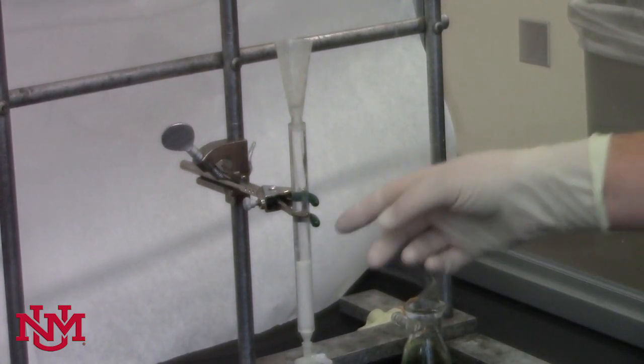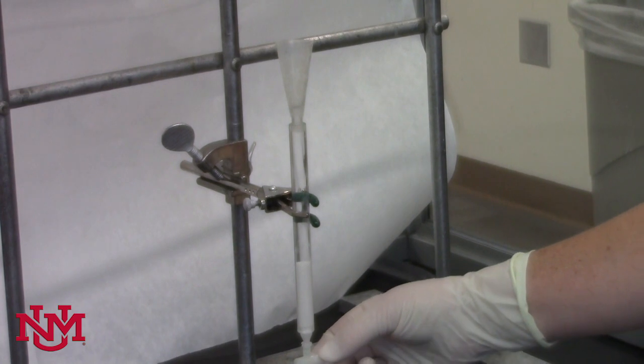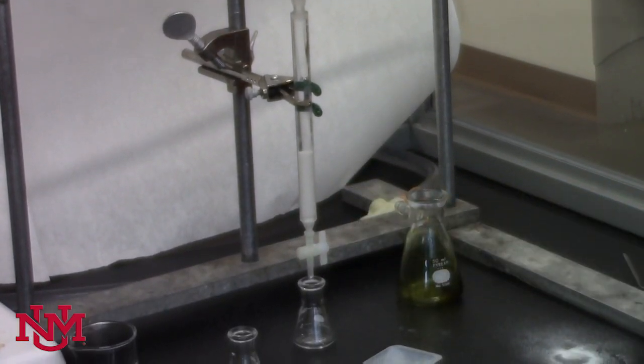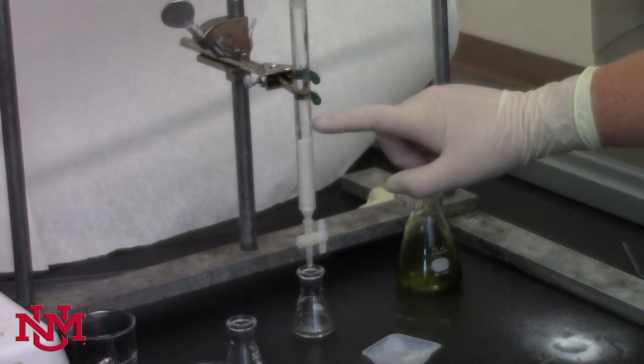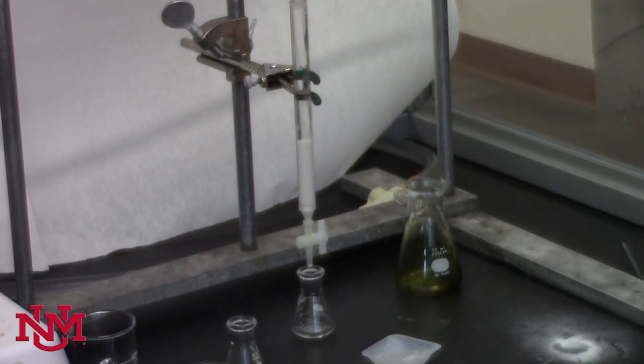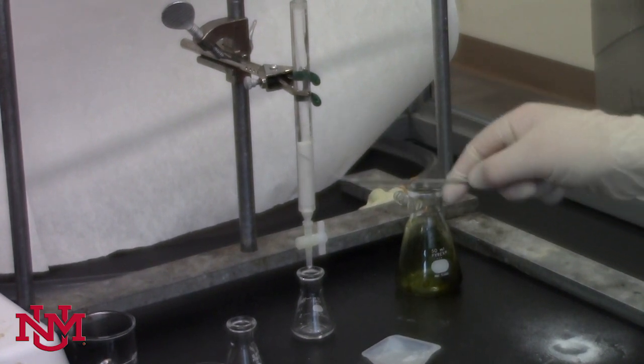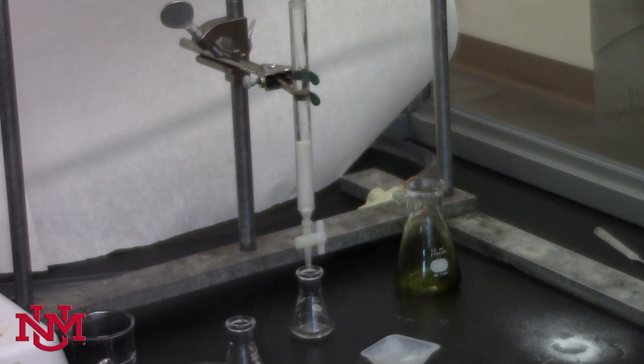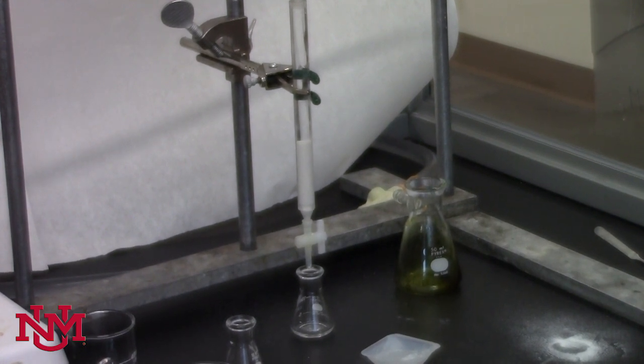At this point, we're going to take our column stopcock and open it, and just let some of that hexane drain. We want it to get until it's about maybe a centimeter or so above the alumina. We just have a nicely packed column of the white alumina, nice and even, no color yet. Then we'll be adding our green in just a little bit, and then it will change color.